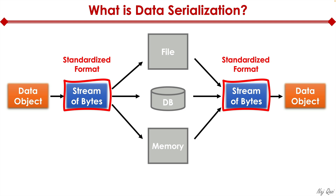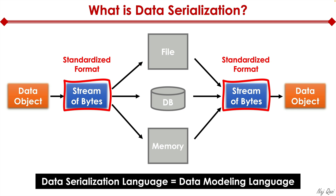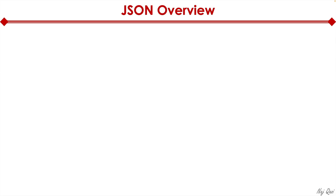A couple of additional terms related to data serialization: there's deserialization, which is the opposite of serialization — here we create an object from a stream of bytes. You may also come across the terms data serialization language or data modeling language as you read different books and texts. JSON belongs to a standardized format, and so does XML, but today I'm focusing on the JSON format, which is a data serialization format.